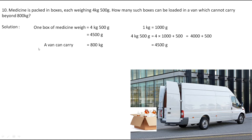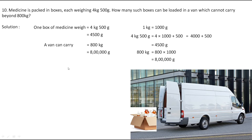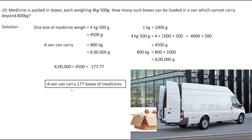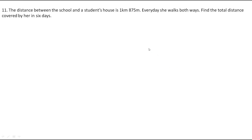One more thing: the van can carry 800 kg. Let's convert this into grams: 800 × 1,000 = 8,00,000 grams. So 800 kg equals 8 lakh grams. They have asked us to find how many boxes can be loaded. For that we divide 8,00,000 by 4,500, which gives approximately 177. So a van can carry 177 boxes of medicines.